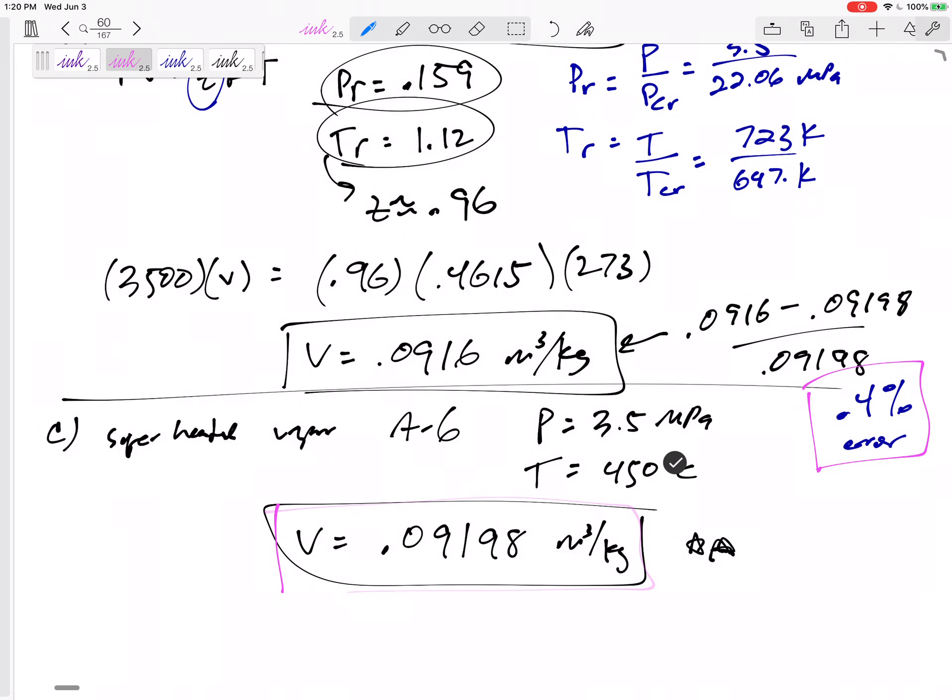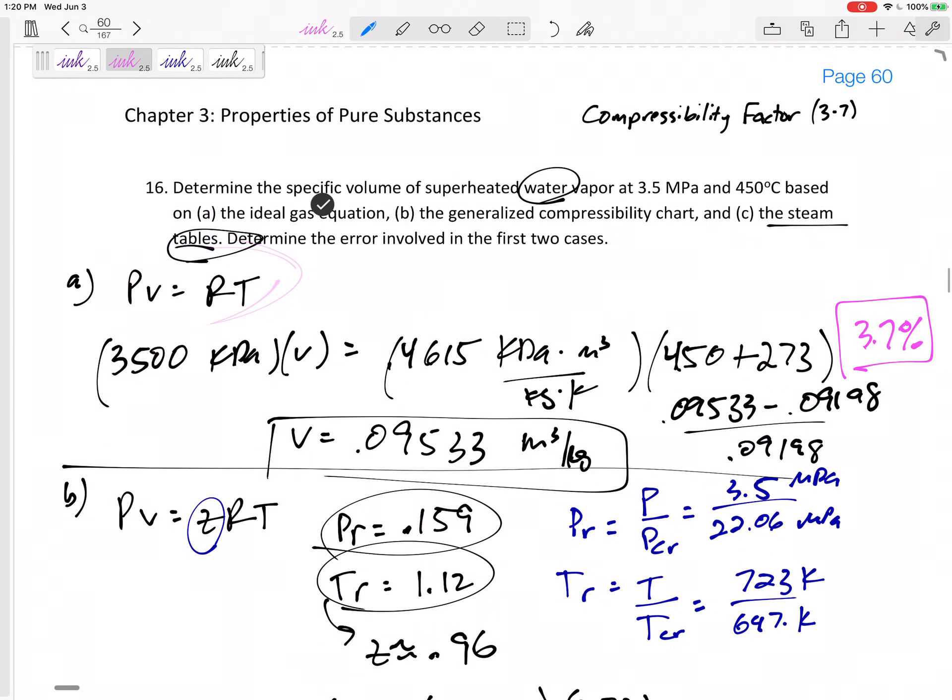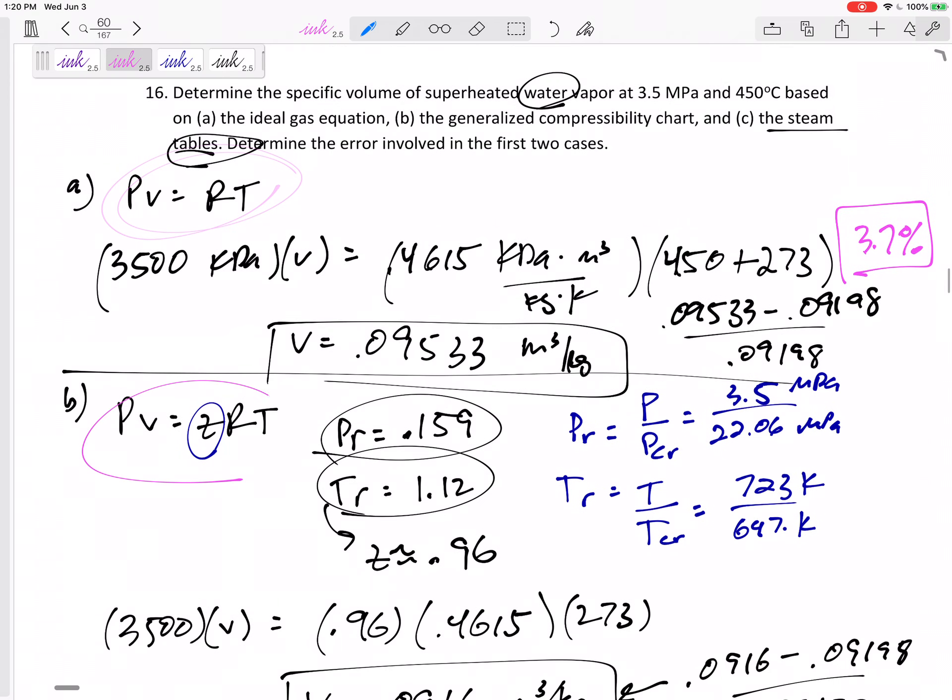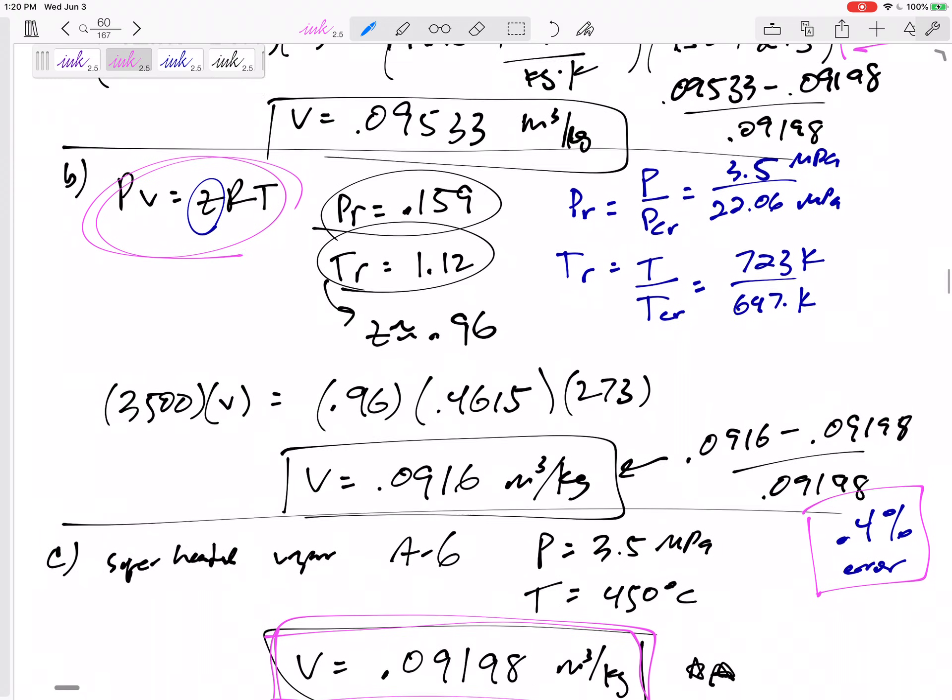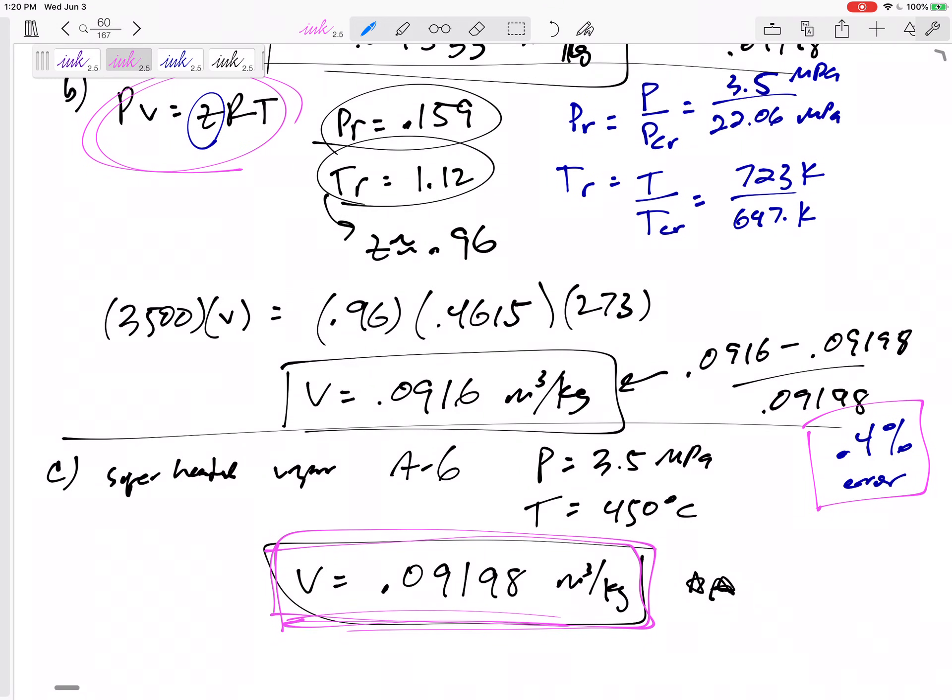All right. So when you have tables, use the tables. But sometimes you don't have tables. Sometimes, instead of having hundreds and thousands of values in those tables, maybe a PV equals RT will work. Maybe it's close enough. Or maybe a PV equals RT plus that chart on figure A15. Maybe that's good enough to work so that we don't have to carry around, don't have to dig through all of those tables. All right. So that's how you can find the specific volume using ideal gas and ideal gas with compressibility. Be ready for that on the test.